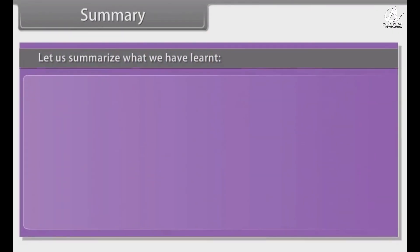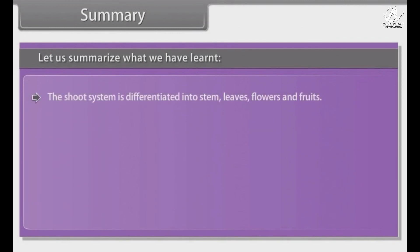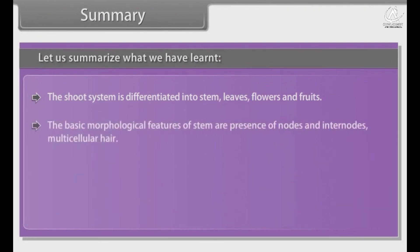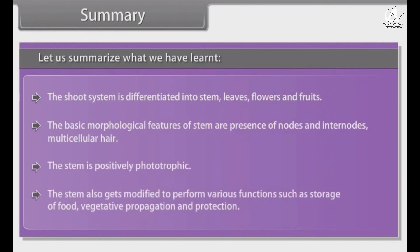In summary, the shoot system is differentiated into stem, leaves, flowers and fruits. The basic morphological features of stem are the presence of nodes and internodes and multicellular hair. The stem is positively phototropic. The stem also gets modified to perform various functions such as storage of food, vegetative propagation, and protection.